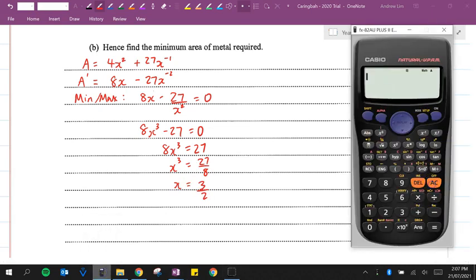So x equals 3 over 2. Okay, when we cube root this, cube root 27 over 8, we will get 3 on 2.